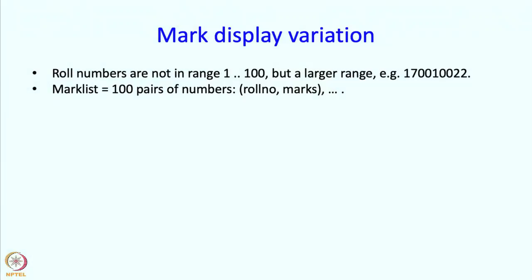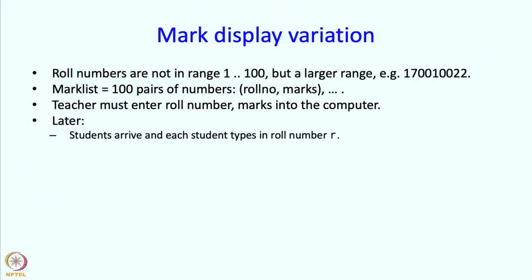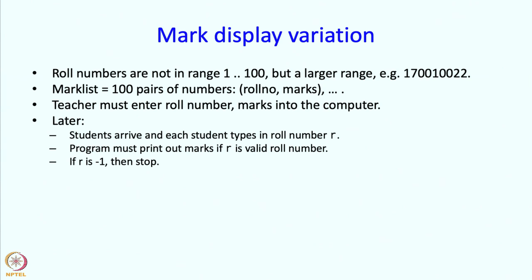The teacher has to type 100 pairs of numbers — roll number followed by mark, roll number followed by mark — 100 times. The number of students in the class still remains 100. Later on, students arrive and each student types in their roll number. The program must print out the marks if r is a valid number, and if r is minus 1 then the program must stop.